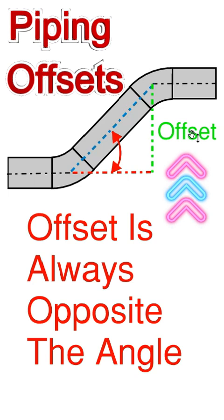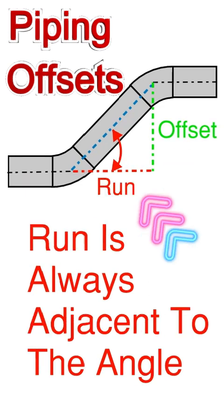The offset that you see in green here is always opposite the angle of the fitting. The other side of the triangle would be called the run that you see in red. The run is always adjacent to the angle.